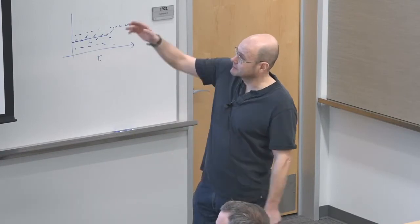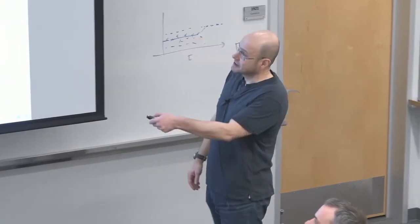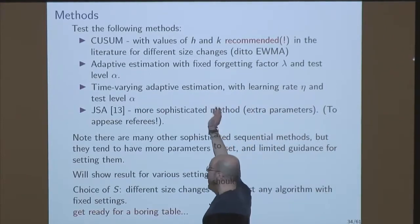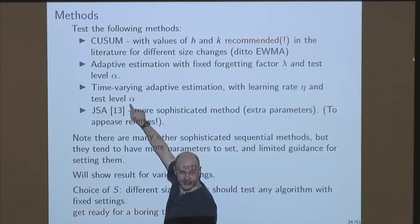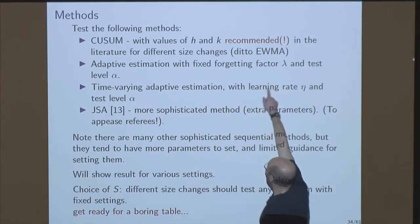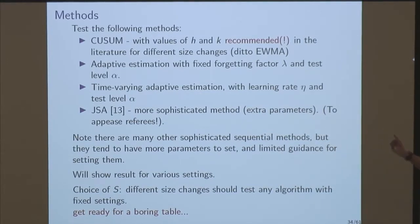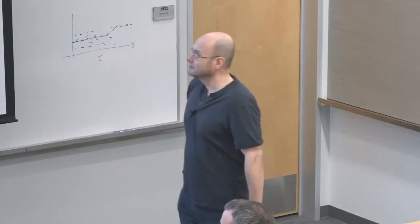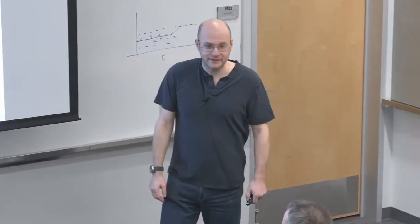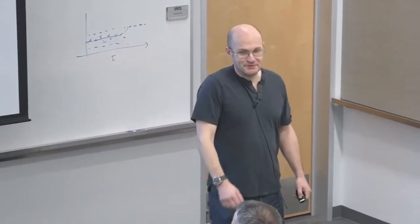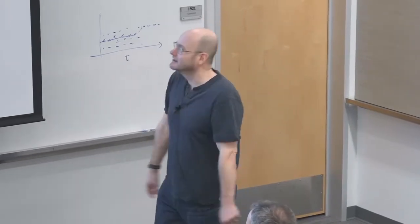Adaptive estimation with fixed forgetting — we'll run it over a bunch of constant lambdas to see what happens. The time-varying approach: I have to set the learning rate, but maybe that's not too critical. The test level — at least I understand what this means, it's kind of the false positive level, whereas I don't know what H and K mean for CUSUM. When this went off to a reviewer, they said 'your method isn't complicated enough, you should do something with more parameters.' But we said we didn't want to do that, so we also tested a more complex method with components for seasonality and an outlier controller.